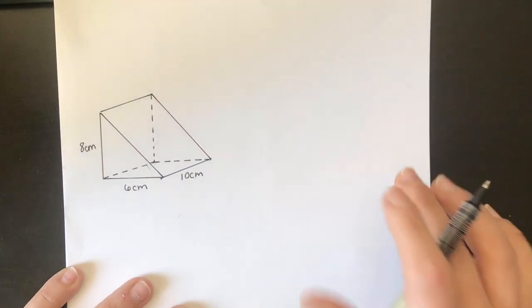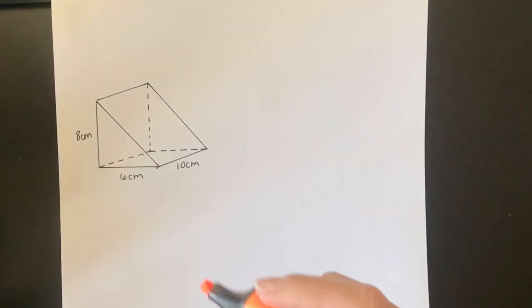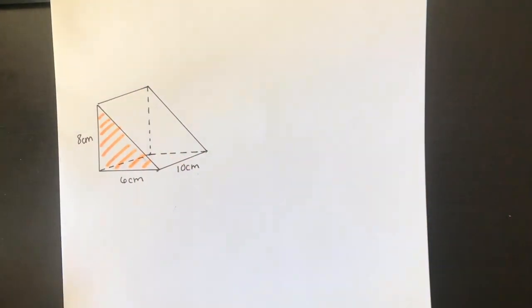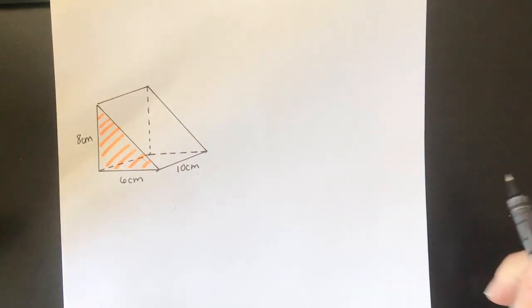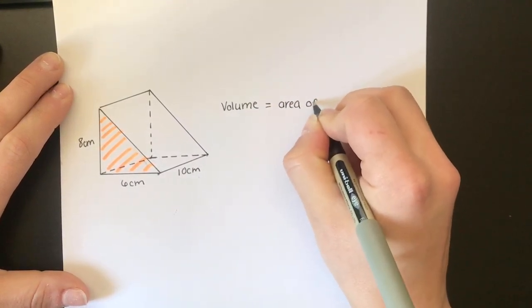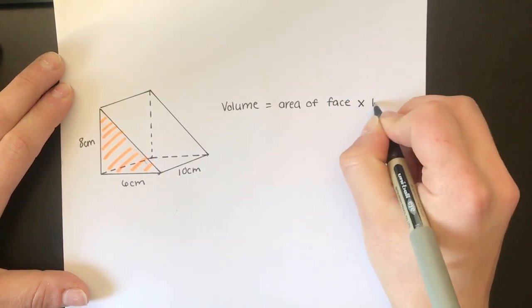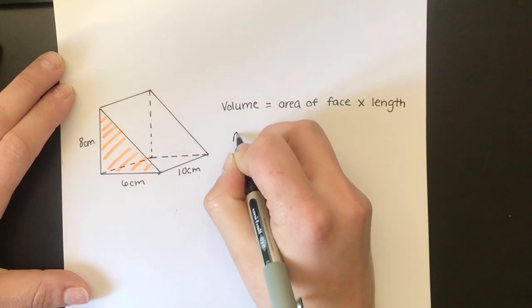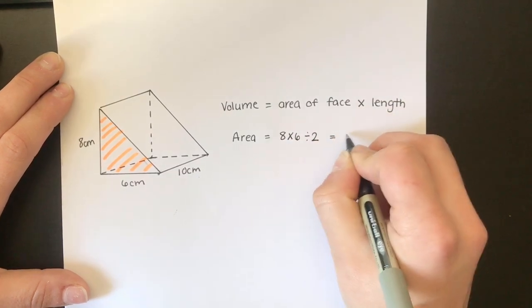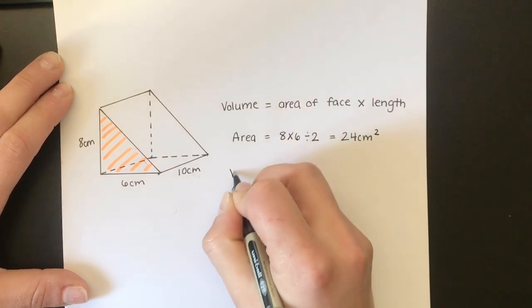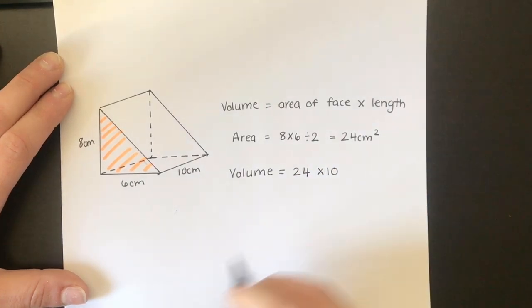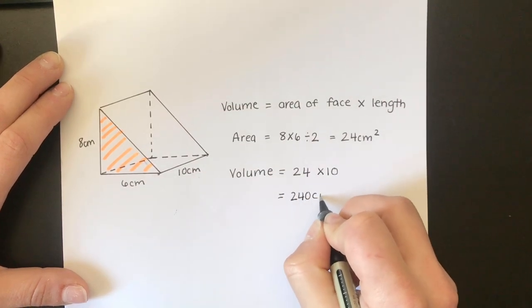Over here I've got a triangular prism. The triangle is the face of this prism. This time I need to find the area of the triangle and times it by the length. So the volume is going to be the area of the triangle times by the length. The area of the triangle is 8 times 6 divided by 2, which is 24 centimeters squared. So the volume is 24 times by 10 — that's the length going backwards — giving 240 centimeters cubed.